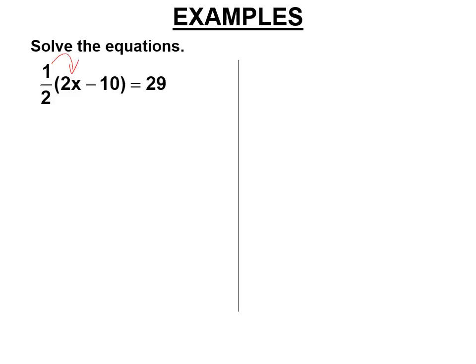So we're distributing a 1.5 here. 1.5 times 2x. 2's cancel. You get x. 1.5 of 10 is 5. 1.5 of negative 10 minus 5. Add 5 to both sides. x equals 34.